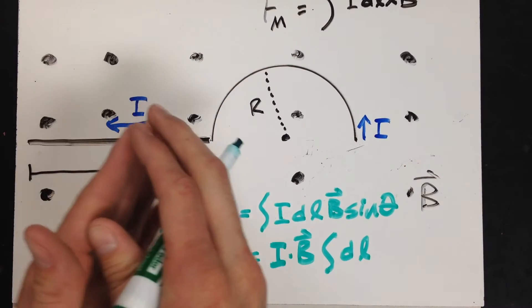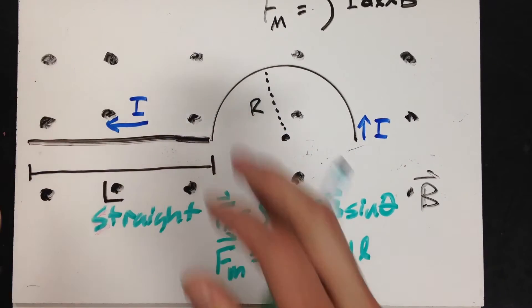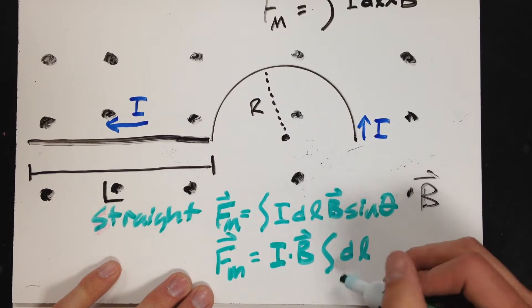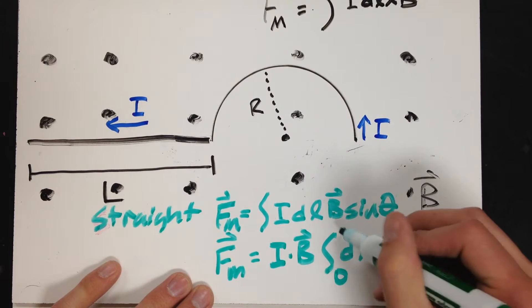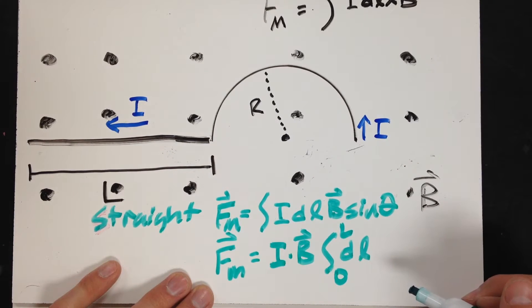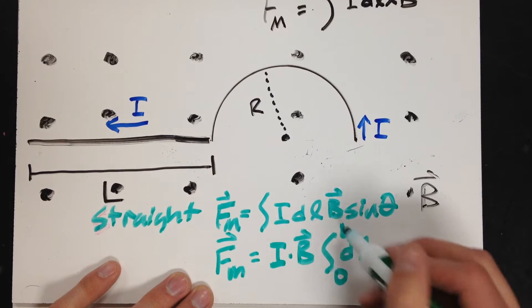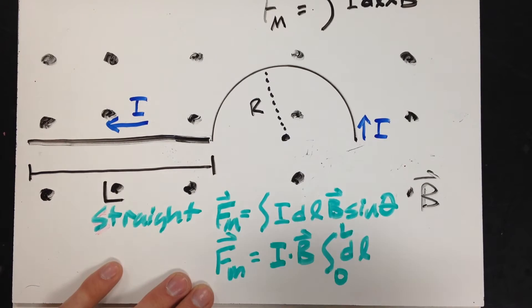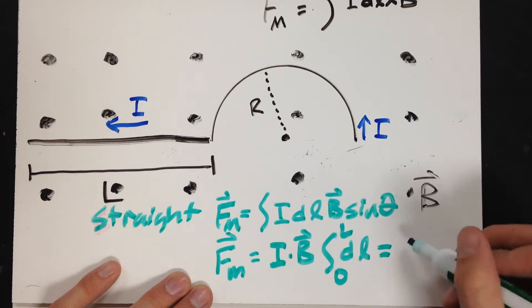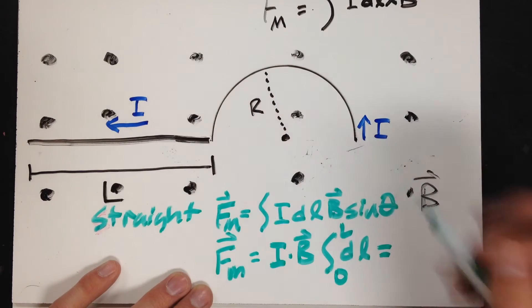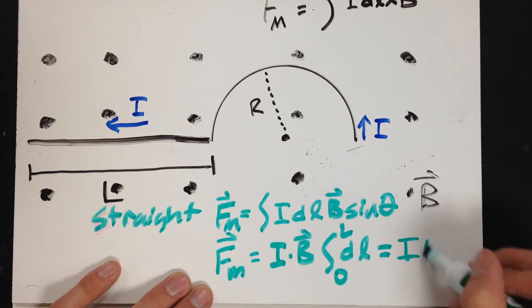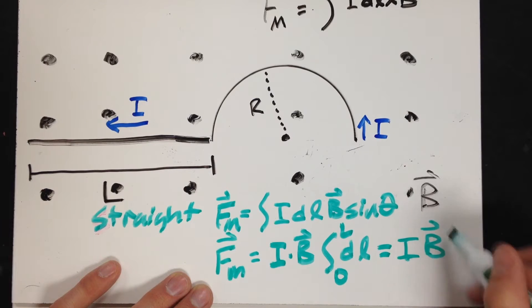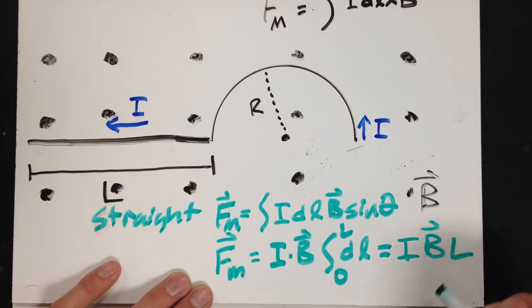So I end up with I times B times the integral of dL. Integrating the entire wire means starting at 0 and going to L. The integral of dL from 0 to L is just L. So the force on the straight section of wire is F = I·B·L.